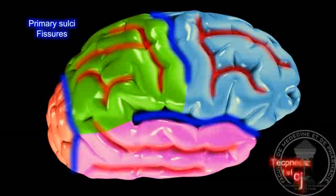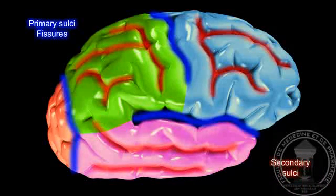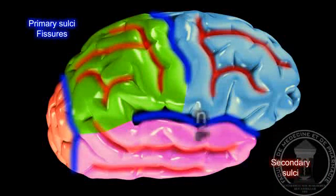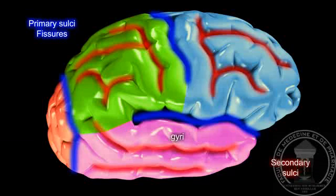In each lobe, there are less deep sulci. These structures delimit the gyri.